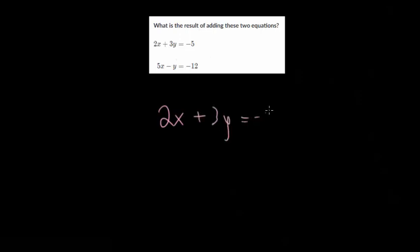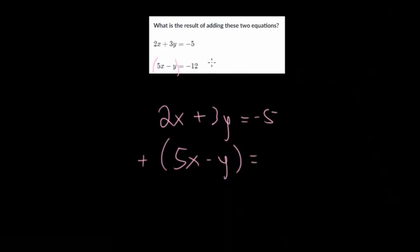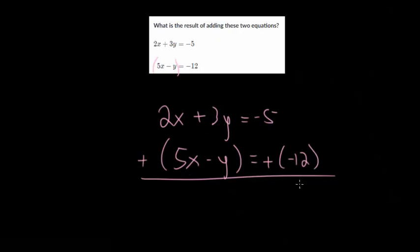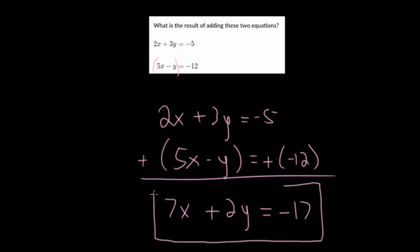Now we're going to add these two equations. So 2x plus 3y equals minus 5, and I'm going to add to both sides the same thing — that's going to be this equation. On the left I'm adding 5x minus y, and on the right I'm adding negative 12. We line up the columns — the x's, y's, and numbers. 2x plus 5x is 7x. 3y plus negative y — so that's subtracting y — would be positive 2y. Minus 5 plus negative 12, so minus 5 minus 12, which would be negative 17. So when we add these two equations together, it results in the new equation 7x plus 2y equals negative 17.